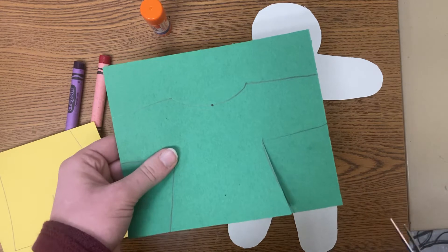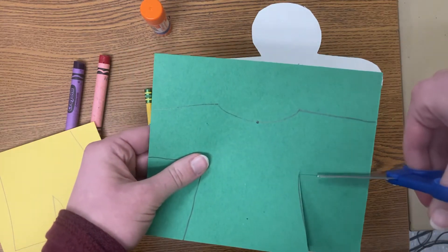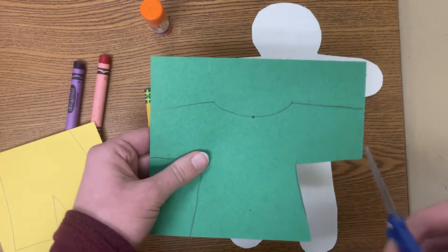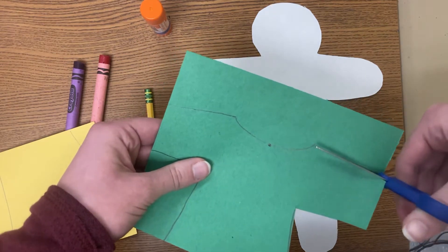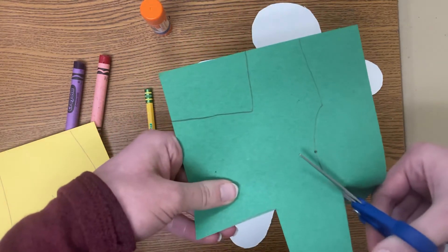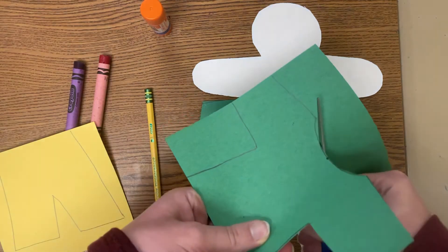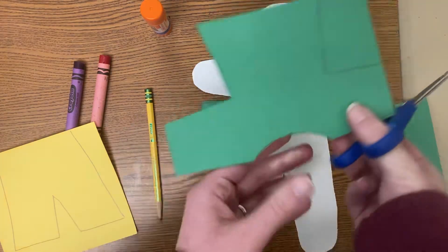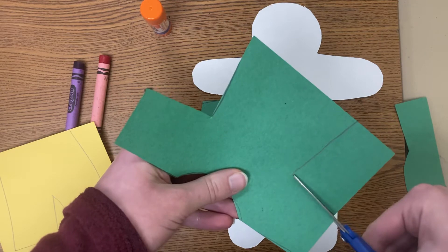And always, always, always cut out and away from yourself. So I'm going to cut on this line. I kind of chomp in on the shirt. I can change which way I'm coming from and now that really cut out that corner really nice for me. Cutting out and away, sometimes you have to turn your paper when you're cutting.